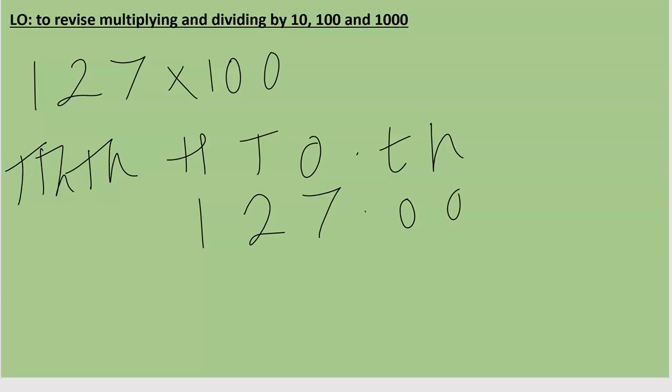Now we know that we can look at ten, hundred, or a thousand and look at how many placeholders that number has to allow us to know how many places to the left, because we're multiplying and the number is going to get bigger, we need to move. So 127 times 100, 100 has two placeholders, so I'm going to move all my digits of 127 two places on my place value grid.